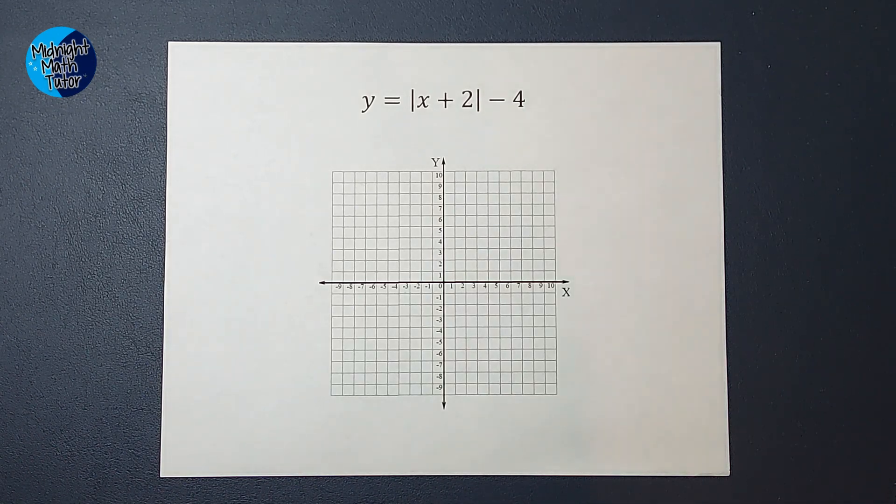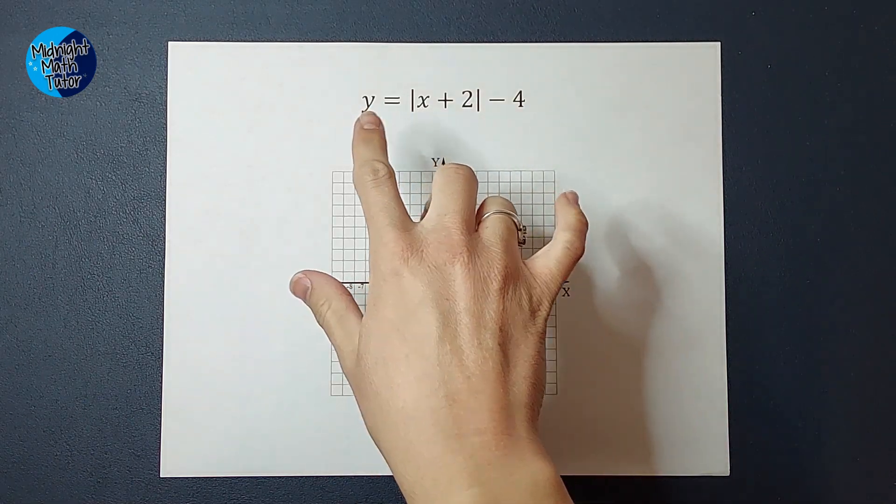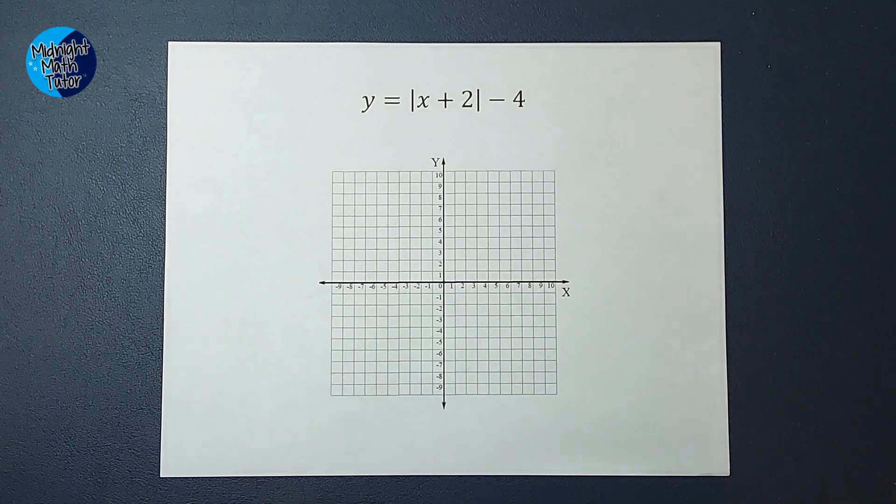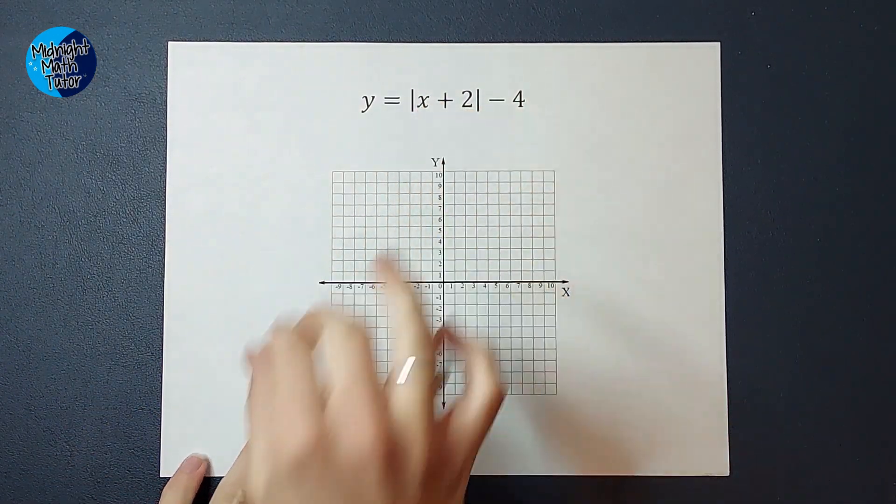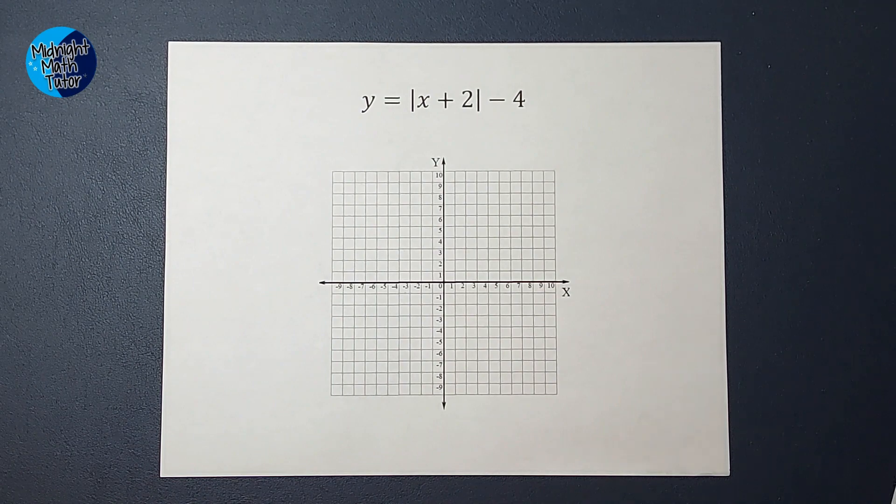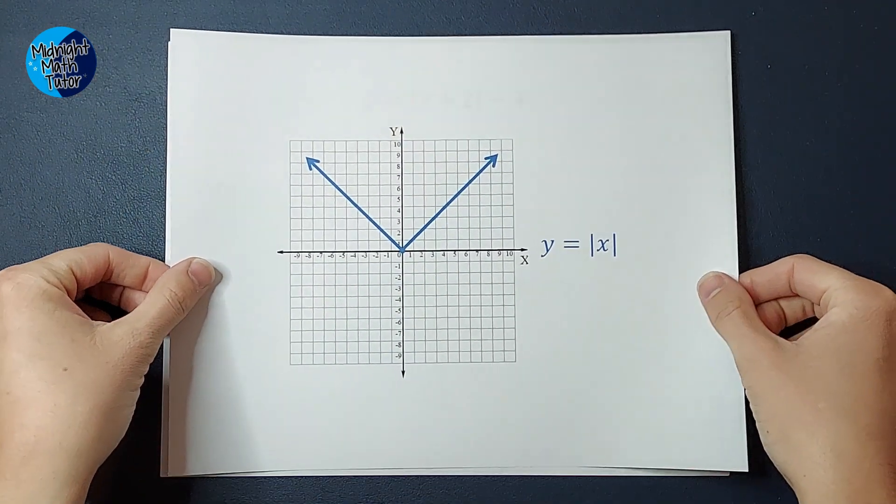So always when we're being asked to graph something, you can always plug in a number for X and get Y and get a point. But that way can be very time consuming. It's just not always the best way. Good news is when we are graphing an equation with absolute value bars, we have what we like to call a parent graph.